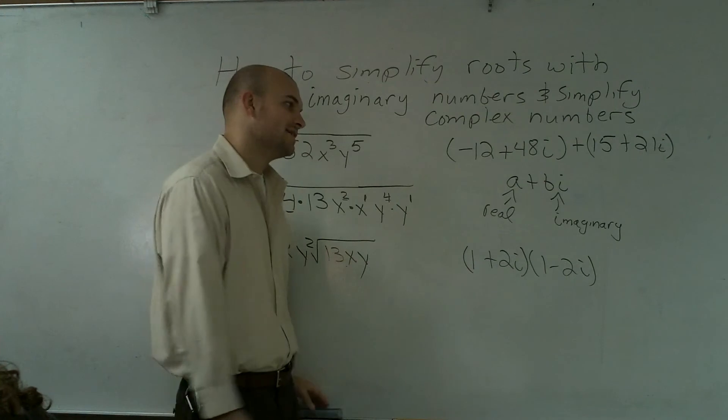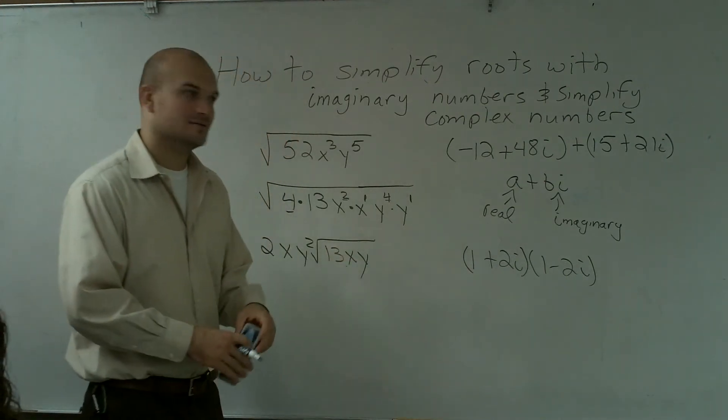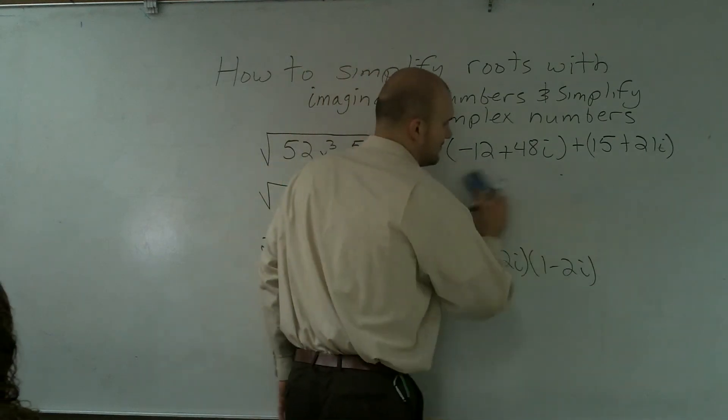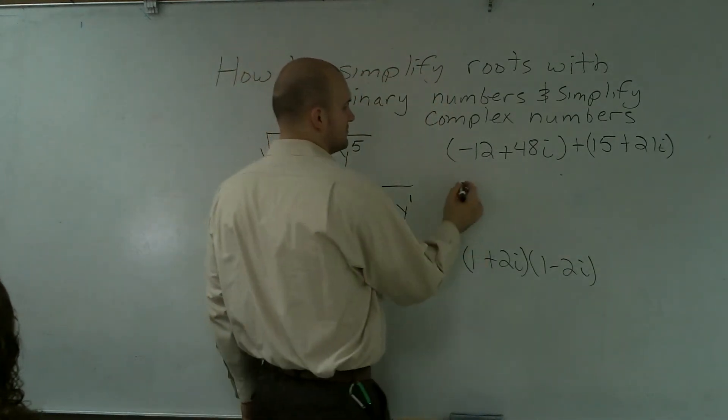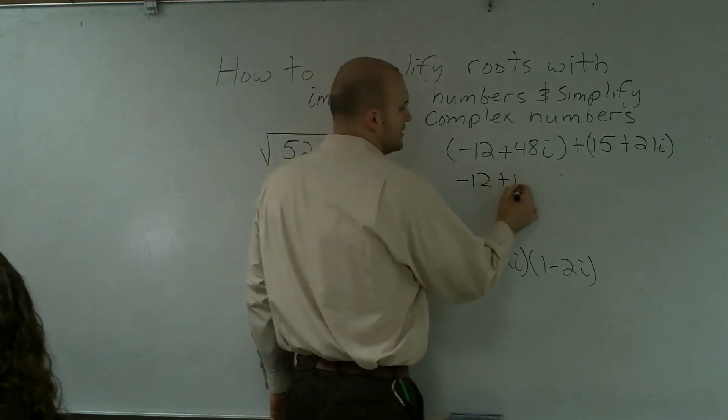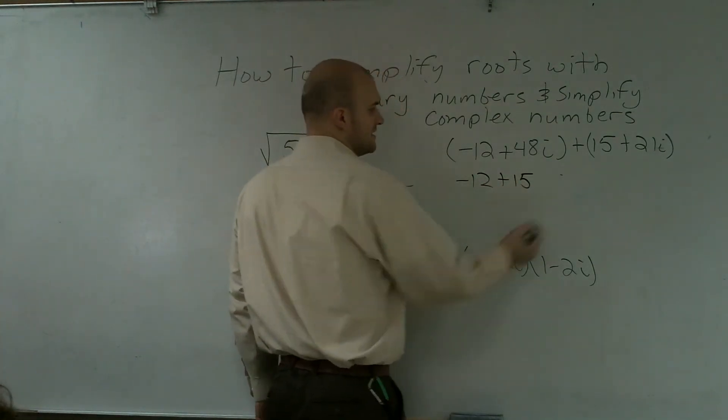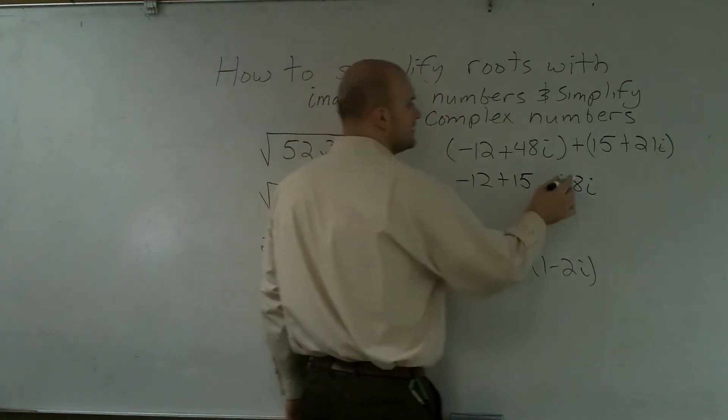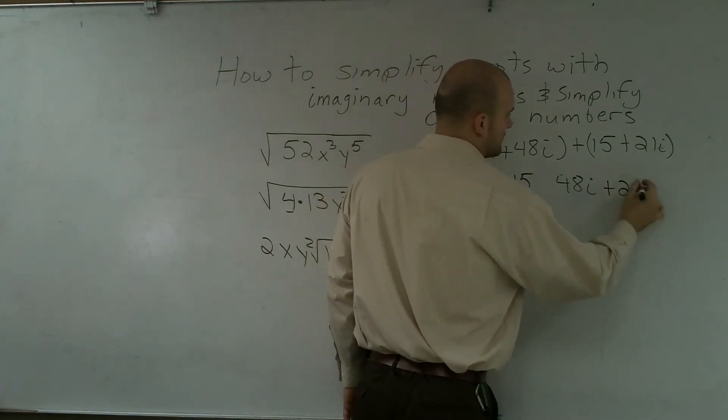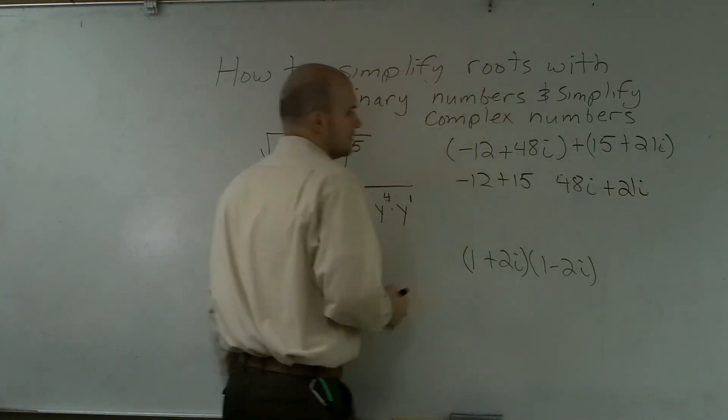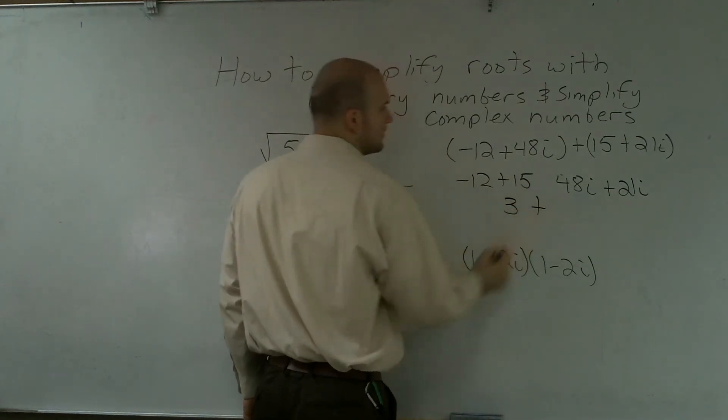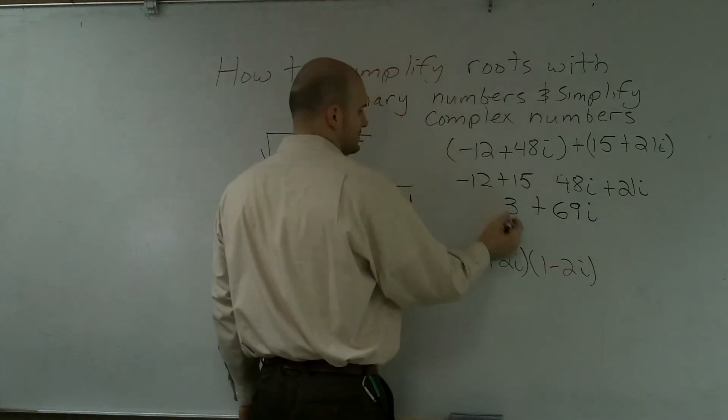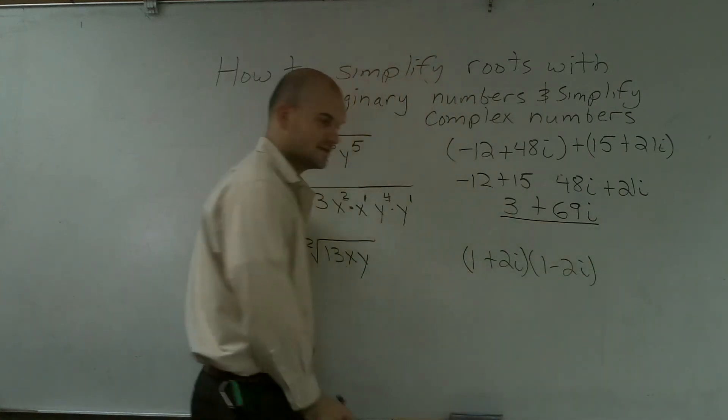So when adding or subtracting, you want to add the real and add the imaginary. So just go ahead and simply, I'm just going to rewrite it so it's a little bit easier for you to follow. Negative 12 plus 48 i plus 15 plus 21 i. Therefore, this now becomes 3 plus 69 i, so that is my final solution.